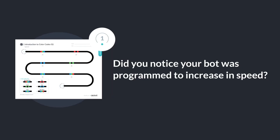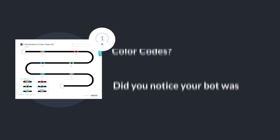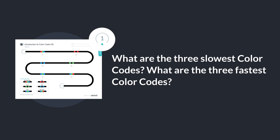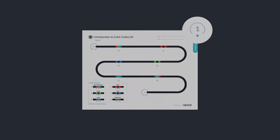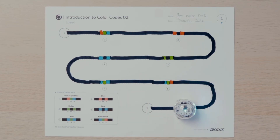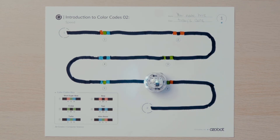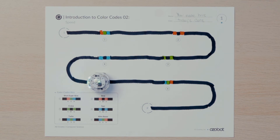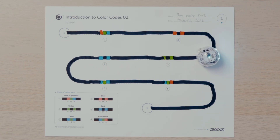Did you notice your bot was programmed to increase in speed? What are the three slowest color codes? What are the three fastest color codes? Let's explore the color codes some more. You will put your bot on start two and observe how it uses its line sensor to follow the pathway and its color sensor to process each color code. See if the direction your bot moves in changes the order of its speed.